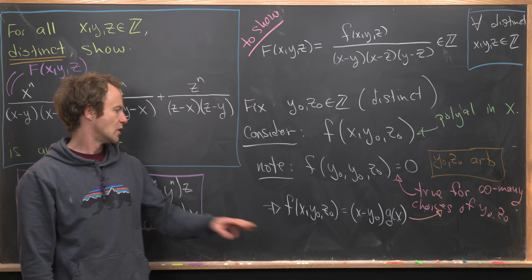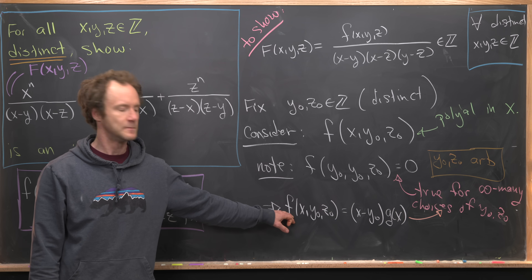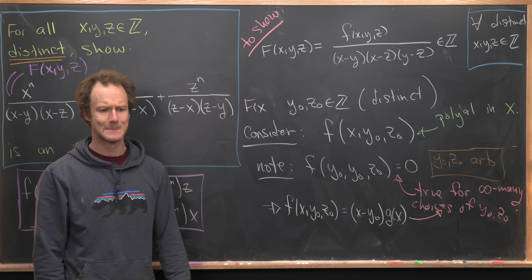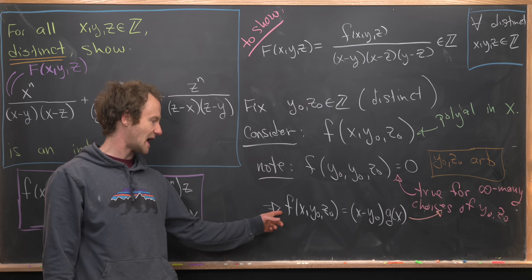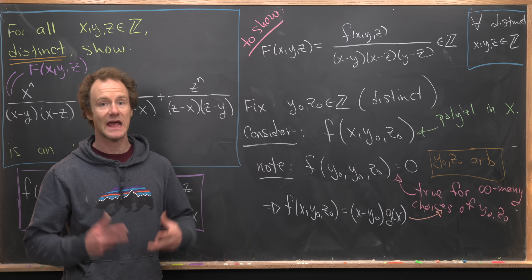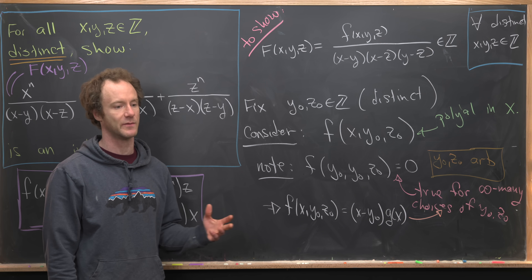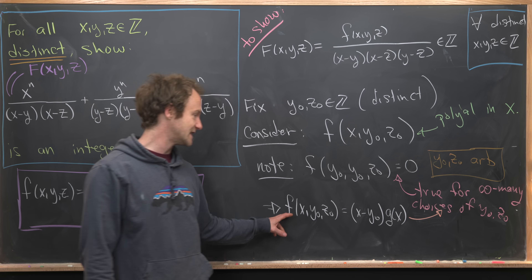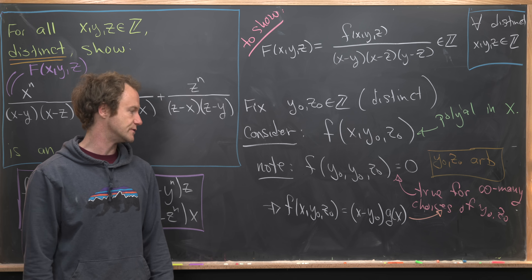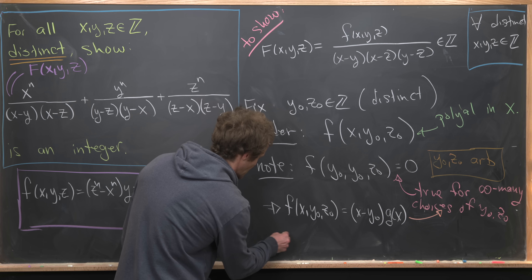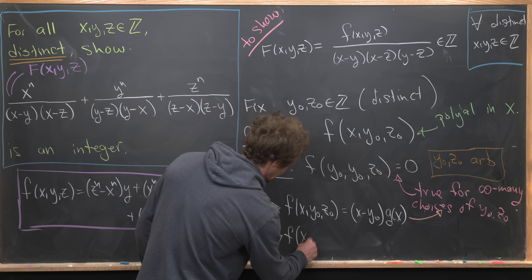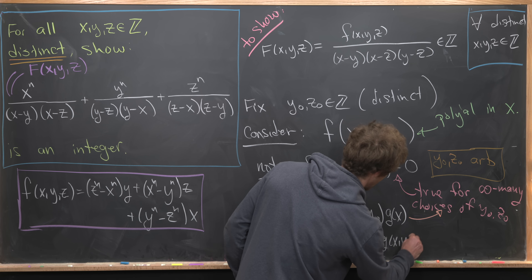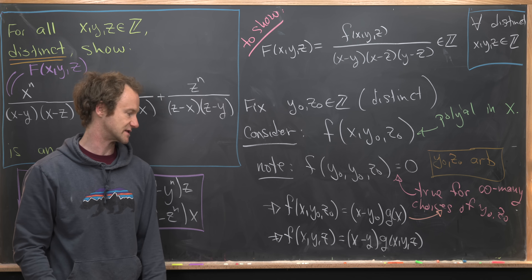To be more precise: we have infinitely many values of y₀ for which f(x, y₀, z₀) equals (x minus y₀) times g(x). Since a polynomial is completely determined by finitely many points — one more than its degree — this equality must hold for all values of y and z. So we can write f(x, y, z) equals (x minus y) times g(x, y, z).